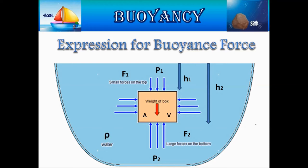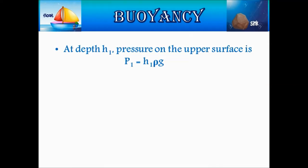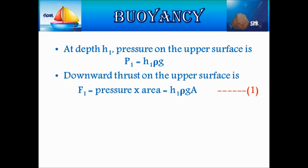Rho is the density of the liquid. At depth H1, pressure on the upper surface is P1 = H1 × Rho × G. Downward thrust on the upper surface is F1 = pressure × area = H1 × Rho × G × A. Let this be equation number 1.